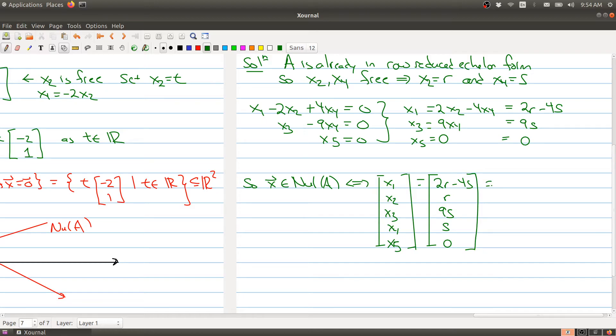What we can do is break this up and rewrite it as a linear combination. This is equal to everything with the R: 2, 1, 0, 0, 0, plus everything with the S: minus 4, 0, 9, 1, 0.